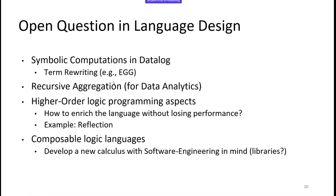There are open questions on the language side: how to better support symbolic computations; recent work on equivalence saturation solvers like egg from the University of Washington implemented a term rewriting system in Souffle, but needs improvements; recursive aggregations, which have quite a bit of research in the database world; higher-order logic and how to implement reflection; and how to better compose Datalog programs — components exist but are not quite the right answer yet.